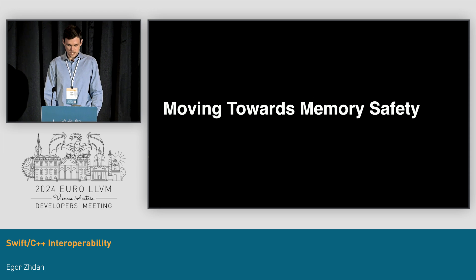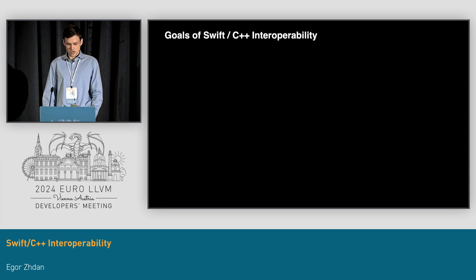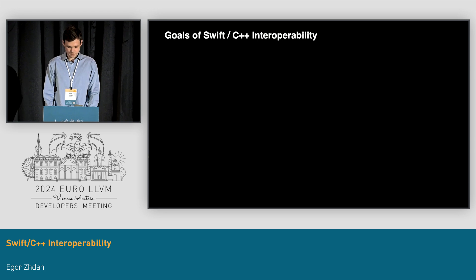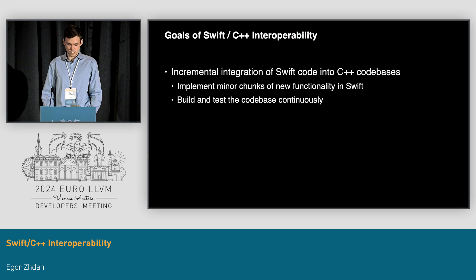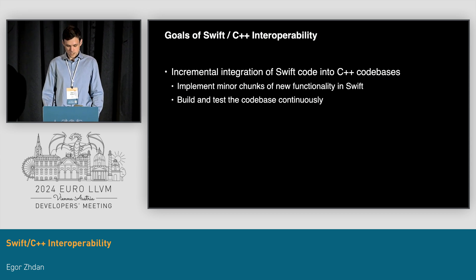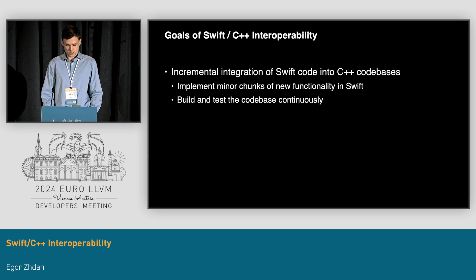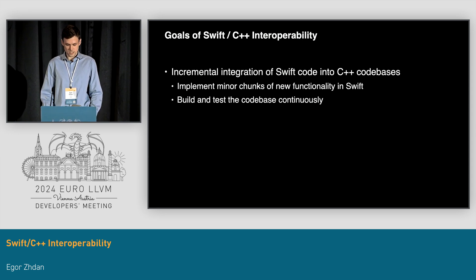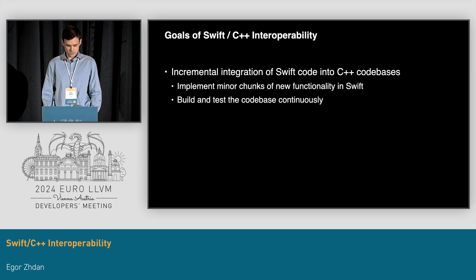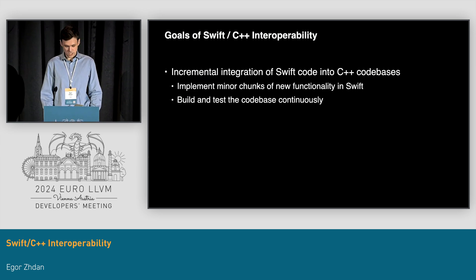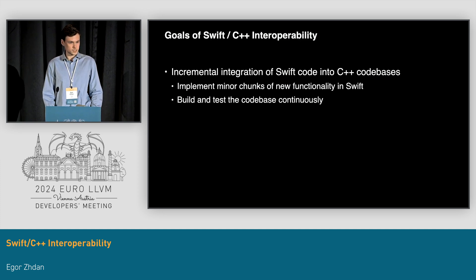How do we gradually move towards memory safety and towards Swift? We would like to allow incremental addition of new Swift code into existing C++ code bases. One example is the Swift compiler itself, which is a huge C++ code base. Over the past few years, we wrote a lot of new compiler source code in Swift, and it is built along with the C++ code and deployed in production. Rewriting large and fast-evolving C++ code bases in Swift is usually not an option. This is why I put emphasis on incremental — anyone adopting Swift should be able to implement small parts of new functionality in Swift while maintaining the project in a buildable and testable state on every step of the way.